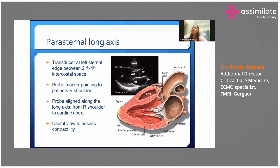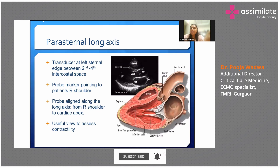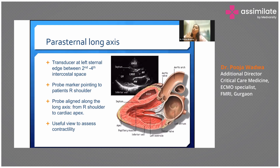This is a parasternal long axis view. The transducer of the probe is at the left sternal edge between the second and the fourth intercostal space, and the probe marker should always point towards the patient's right shoulder so that it is aligned along the long axis. This view tells us a lot about the contractility — you can see the contractility of all the chambers in this view.